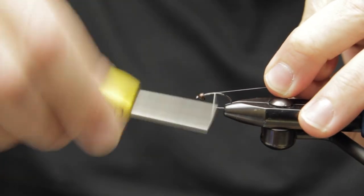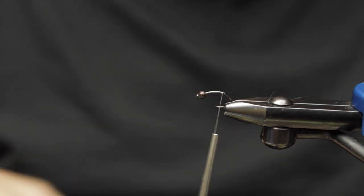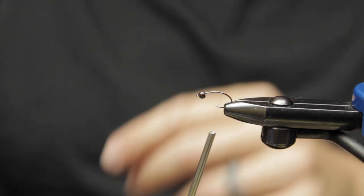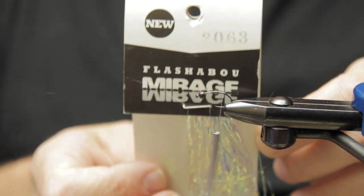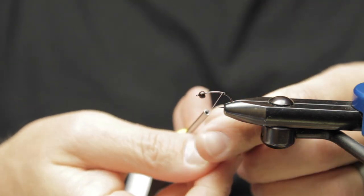Next up, this is some Mirage Flashabou. It's kind of like an opalized color, very reflective, and we're using this for its attractive purposes on this fly.